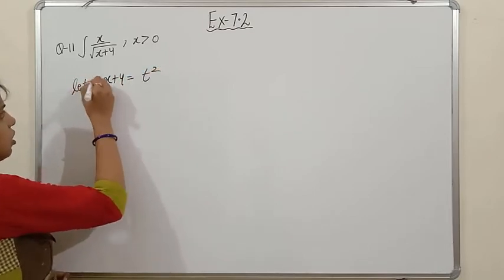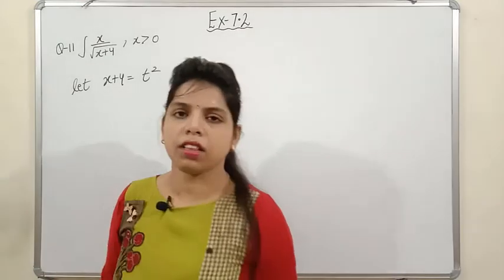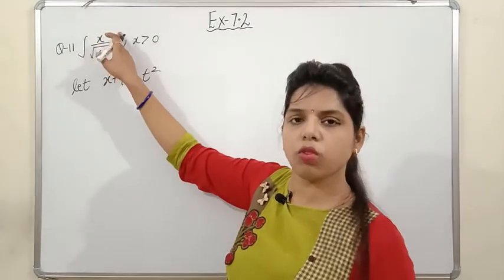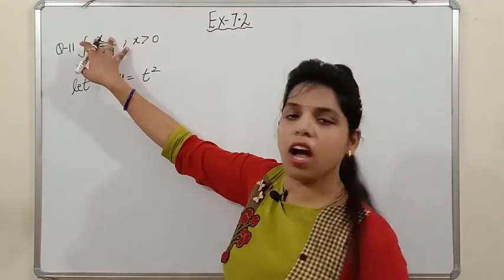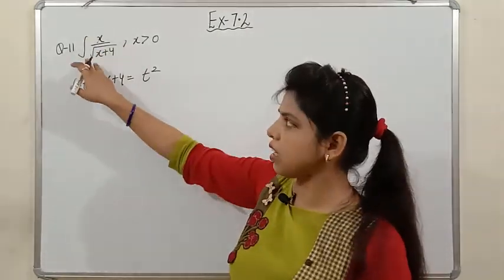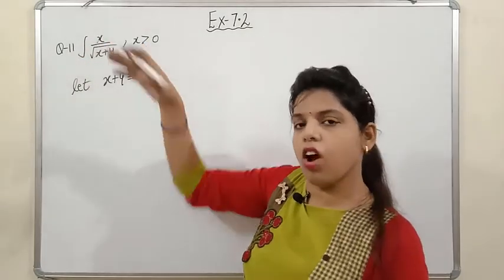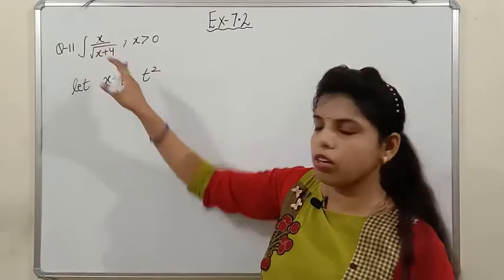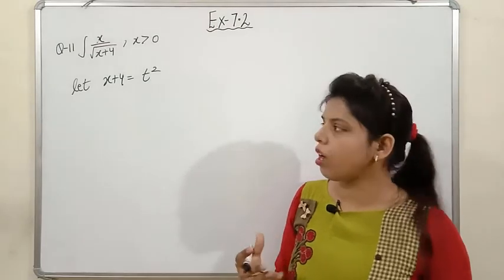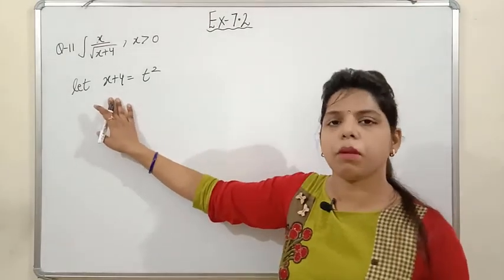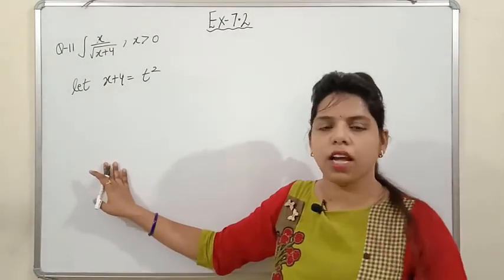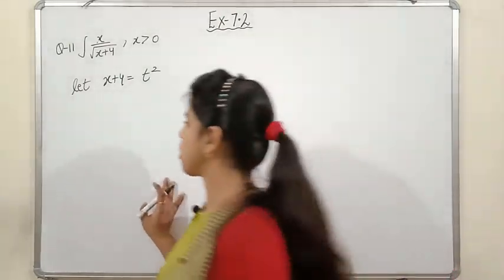So let us take x + 4 = t². You can apply any method — for instance, adding and subtracting 4 — but I will follow the substitution method from my previous video. The key idea is that x+4 upon √(x+4) simplifies by cancelling a half-power, and the remaining integral −4/√(x+4) follows the x^n formula.